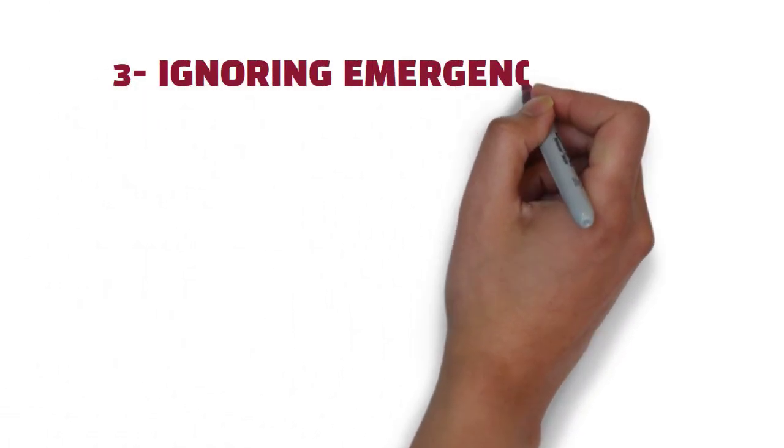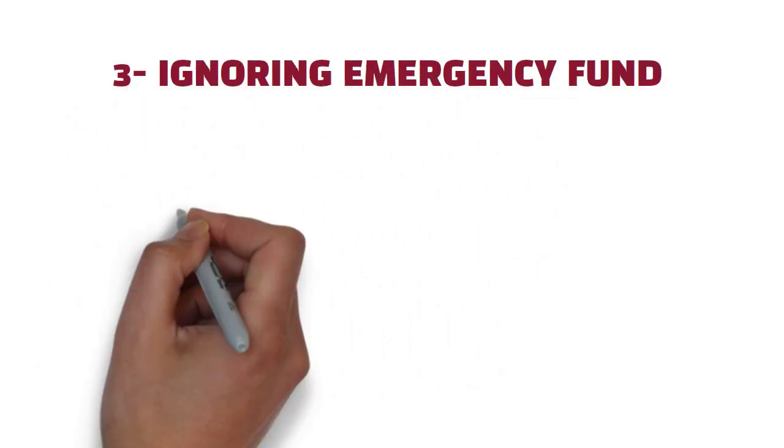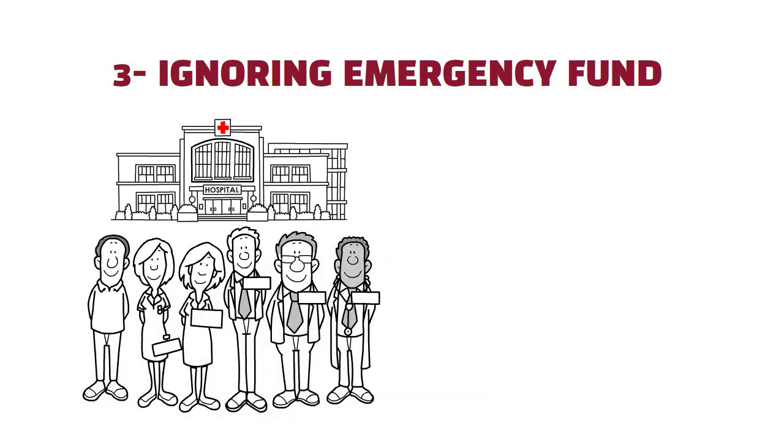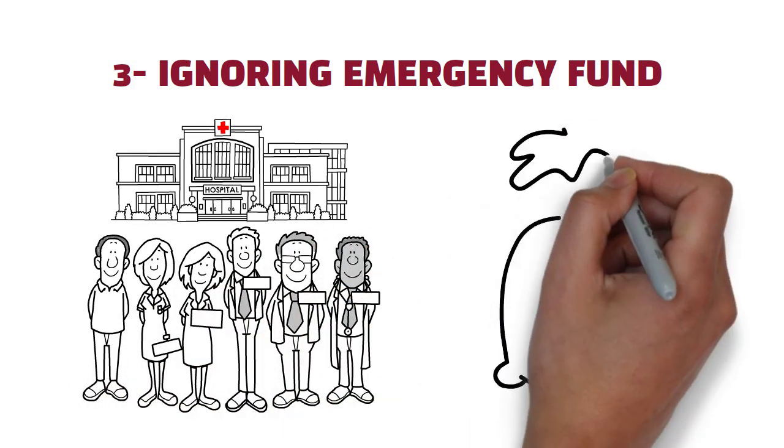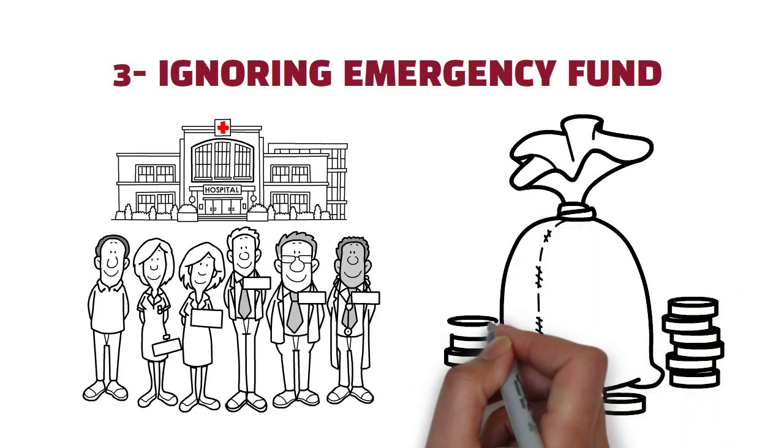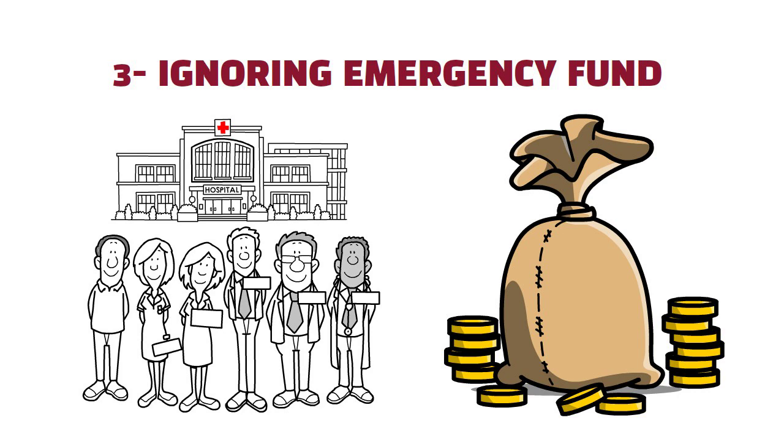3. Ignoring emergency fund. Life is unpredictable, and unexpected expenses can arise at any time. Build an emergency fund that covers at least 3 to 6 months' worth of living expenses. It will provide you with a safety net during difficult times.